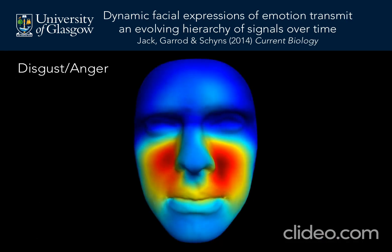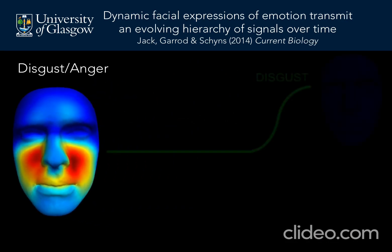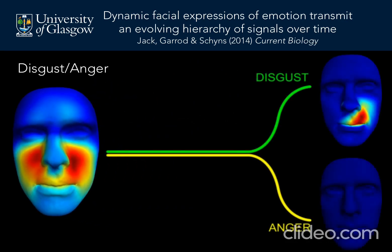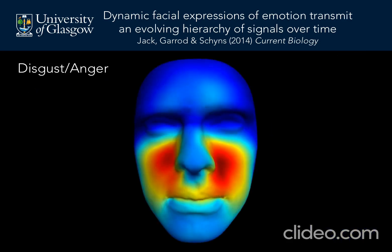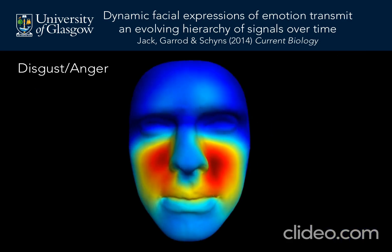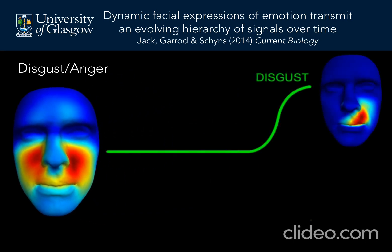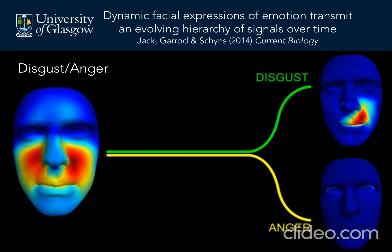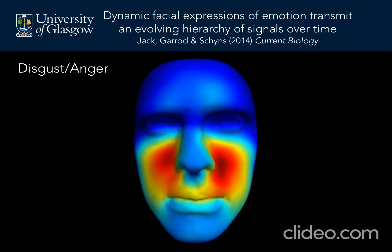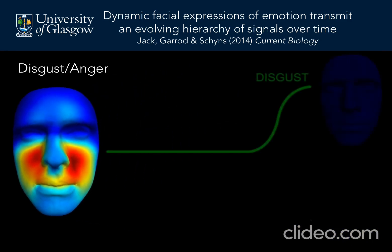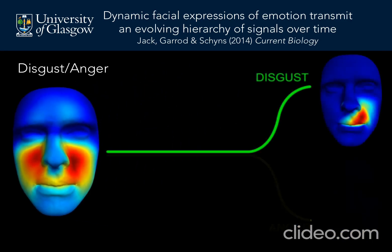We found a similar pattern with disgust and anger. Both transmit the nose wrinkler early in the signaling dynamics and then transmit action units that distinguish them — the upper lip raiser and the eye whites. Therefore, disgust and anger, both also considered basic emotions, are also confused early in the signaling dynamics and are not distinguished until later.